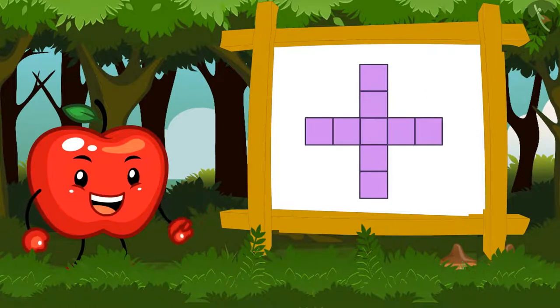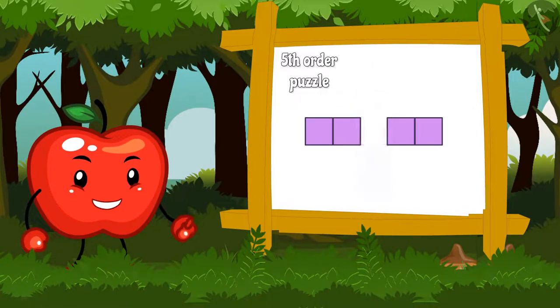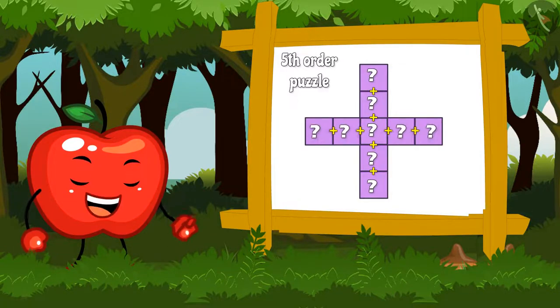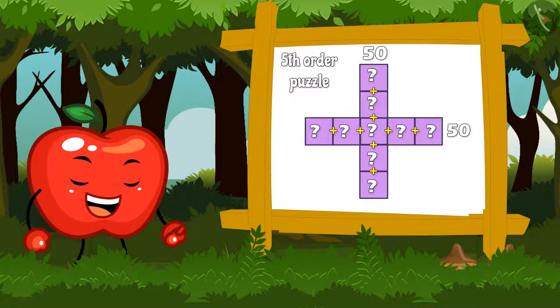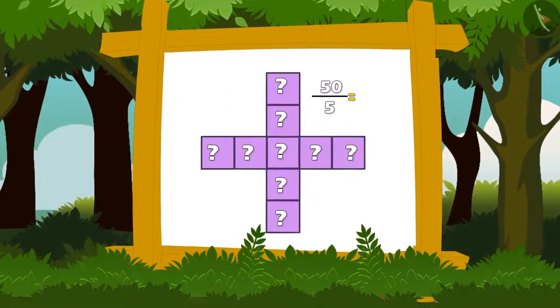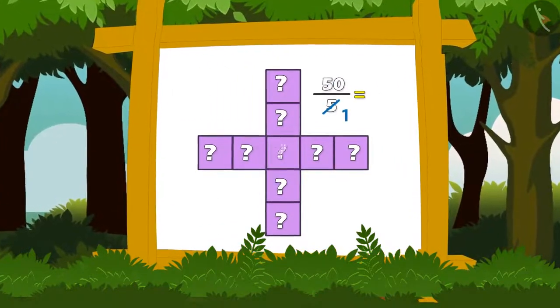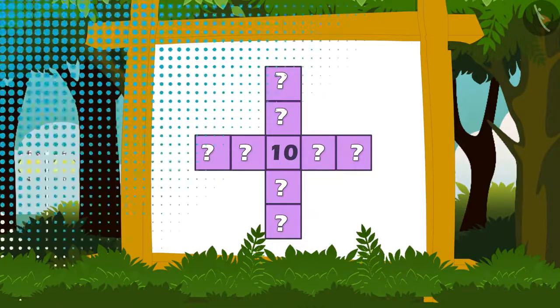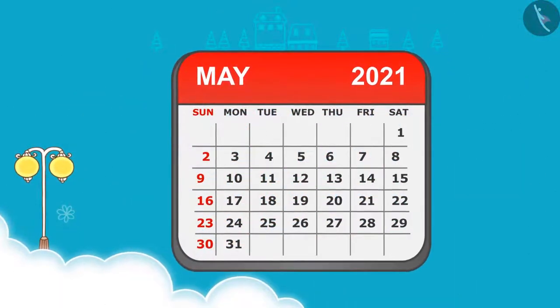Appy says here the cross puzzle is of the fifth order. Its vertical and horizontal sum is 50. So by dividing 50 by 5 I can find the central number of the puzzle that is 10. We know that in a calendar there are numbers only till 31.